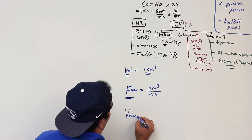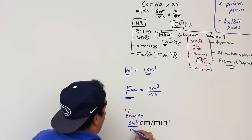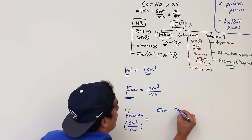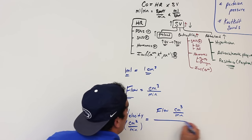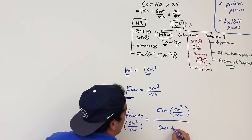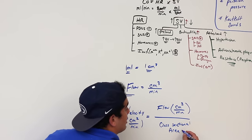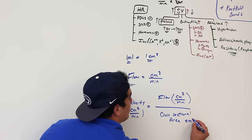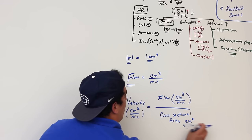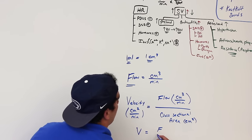There's also the concept of velocity of blood flow — the speed at which blood is moving, in centimeters per minute. Velocity is equal to flow (centimeters cubed per minute) divided by the cross sectional area of the blood vessel, which is in centimeters squared. So velocity equals flow over area.